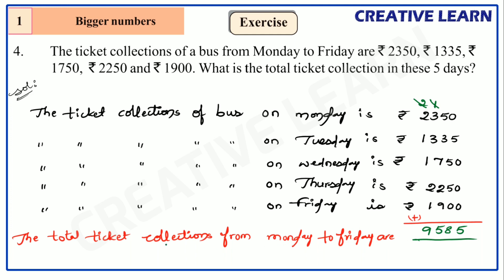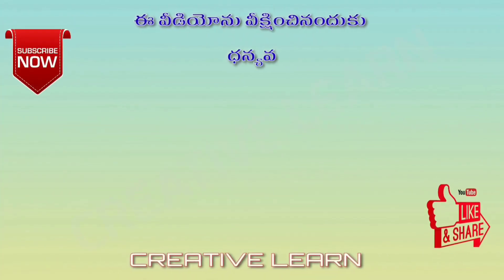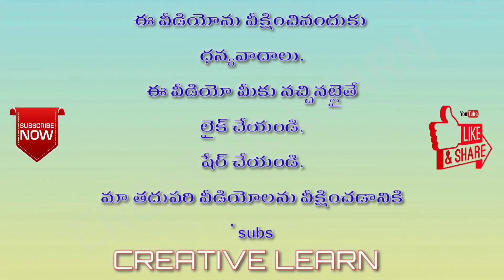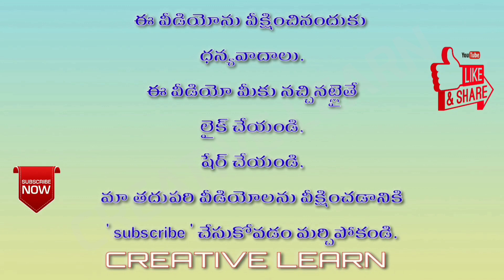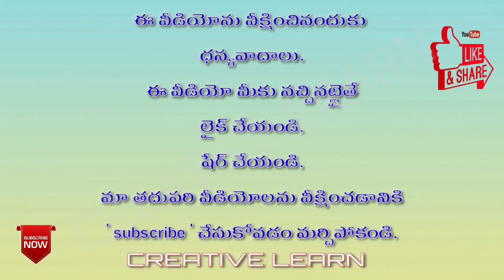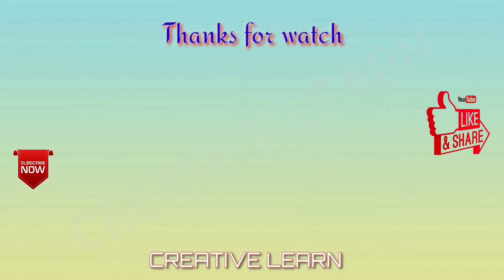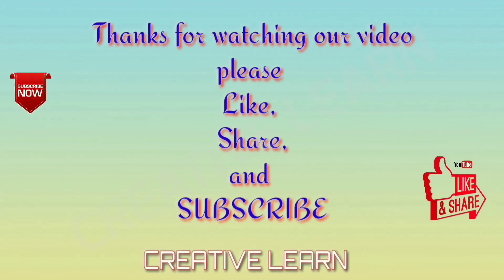So the total ticket collections from Monday to Friday is 9,585 rupees. Therefore, the total collection is 9,585 rupees. Thanks for watching our video — please like, share, and subscribe.